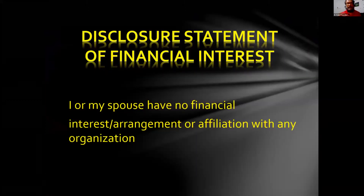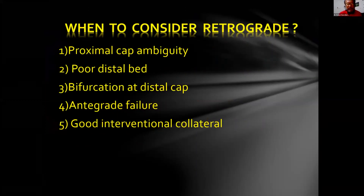When to consider retrograde: one — proximal cap ambiguity; two — poor distal bed; three — bifurcation at distal cap; four — antegrade failure; five — you have to have very good septal collateral for retrograde.